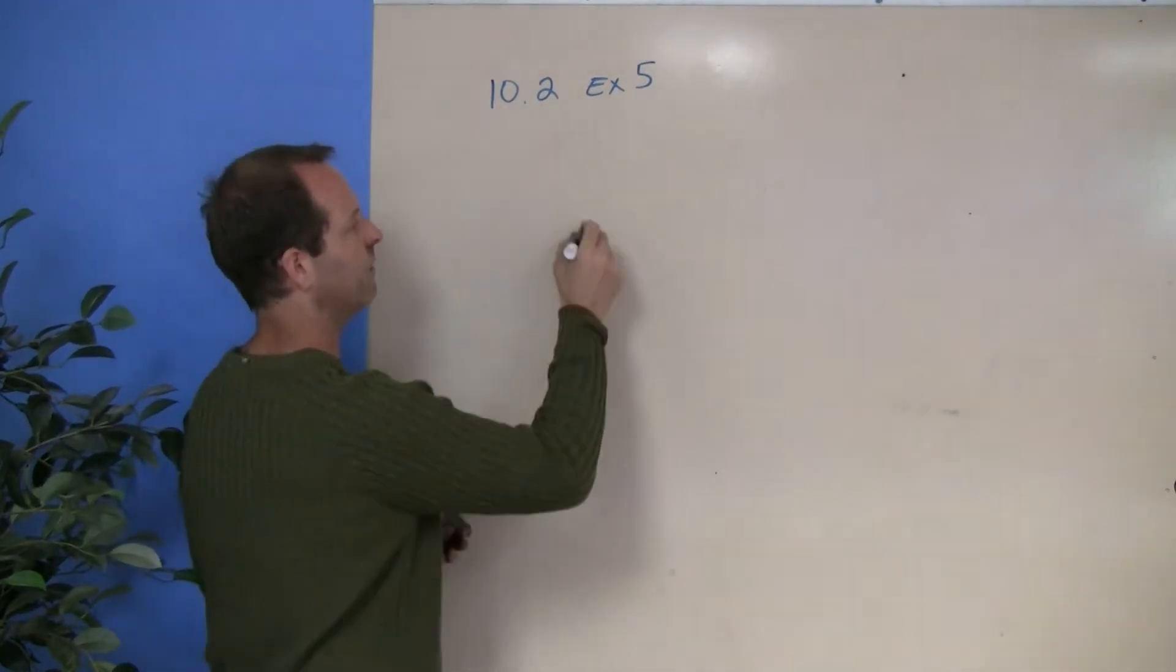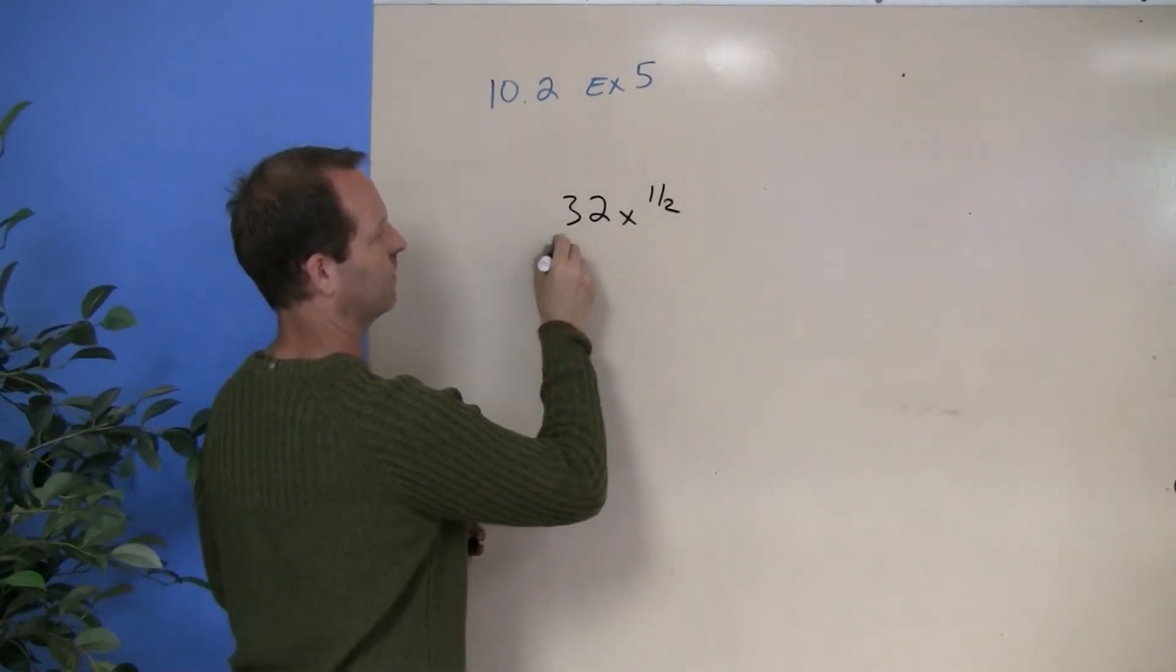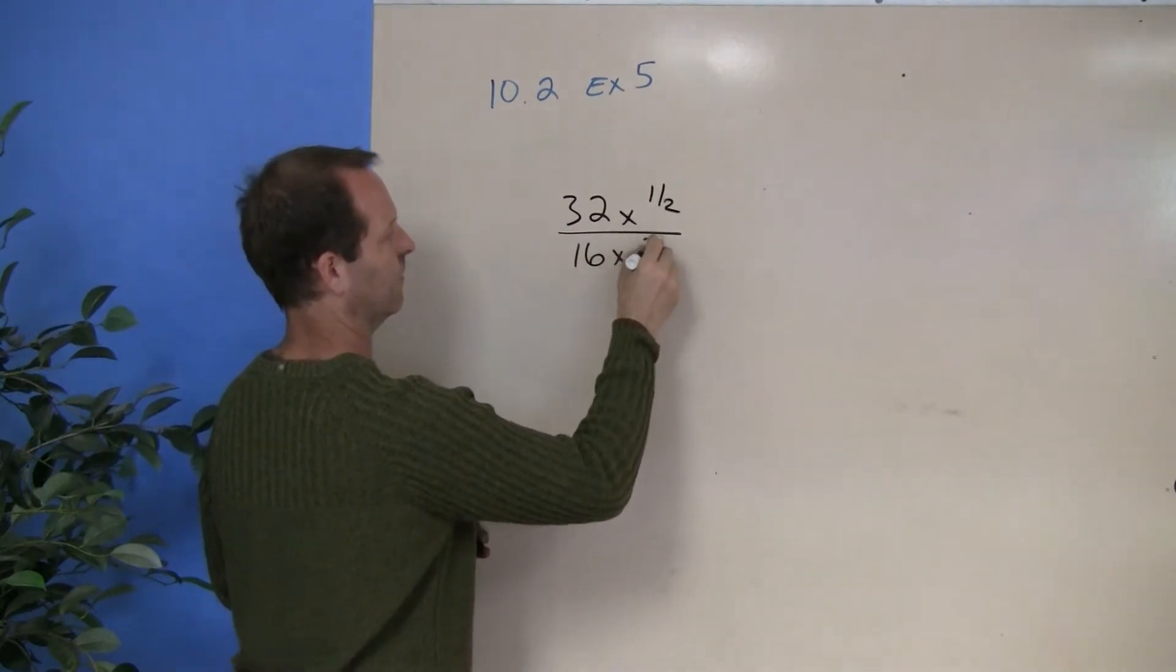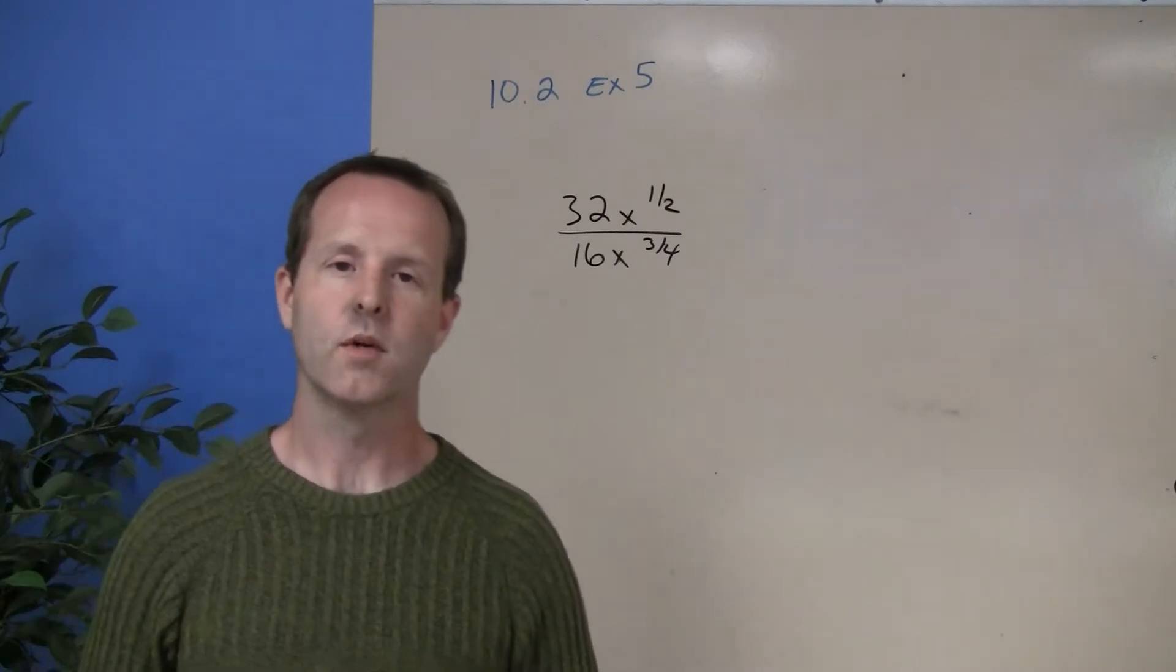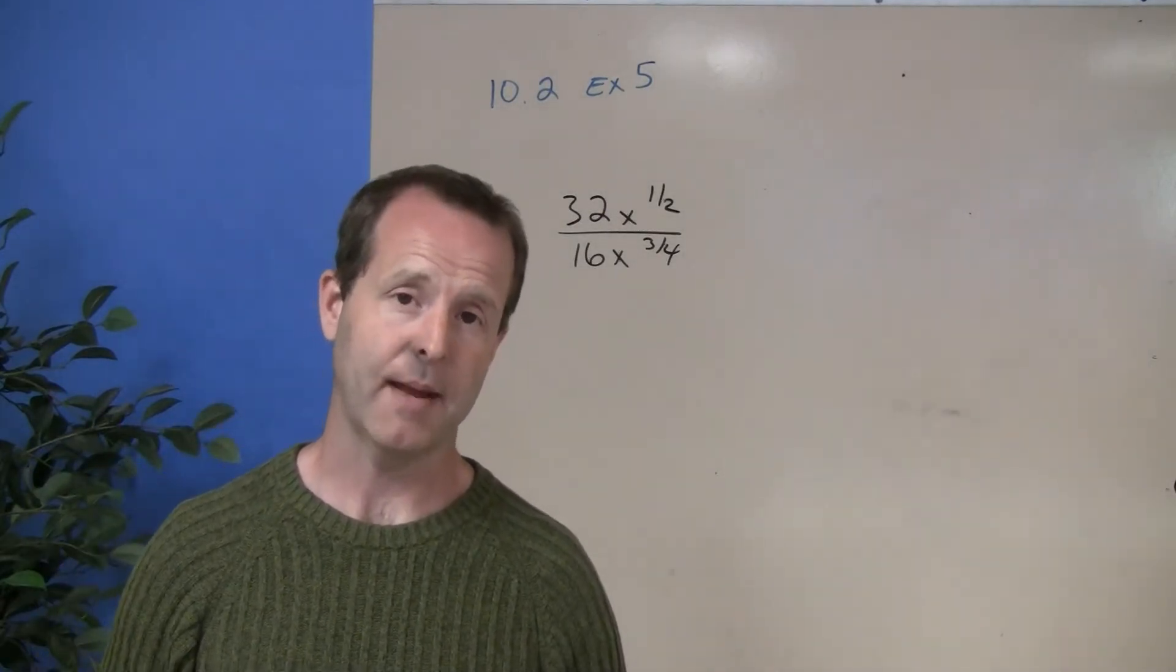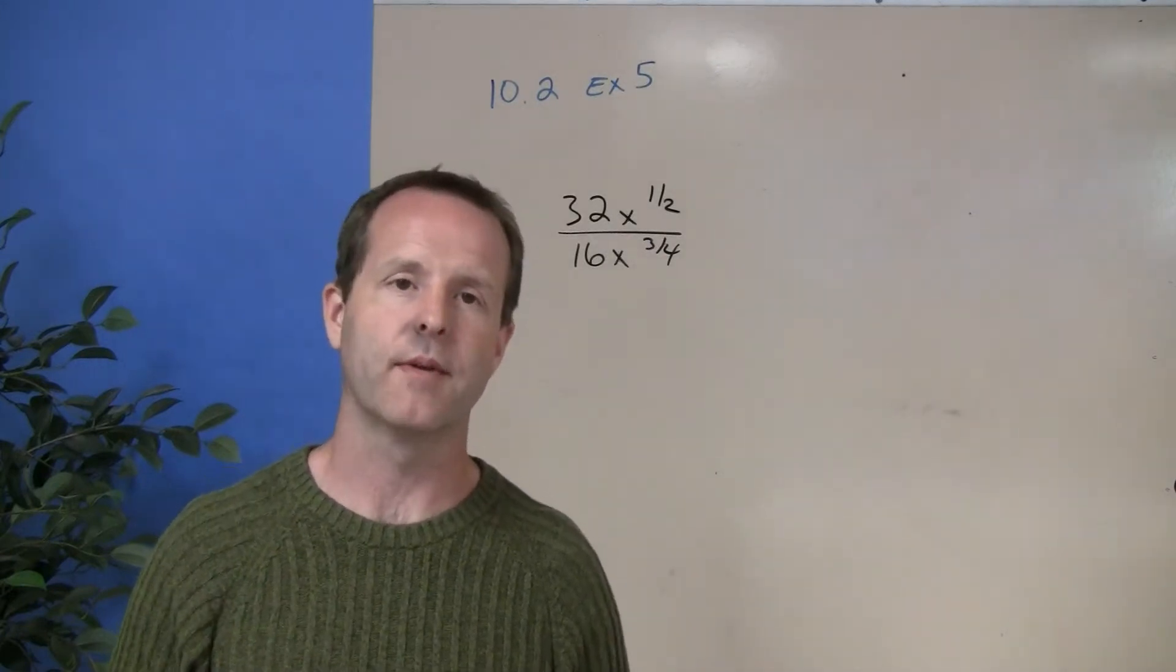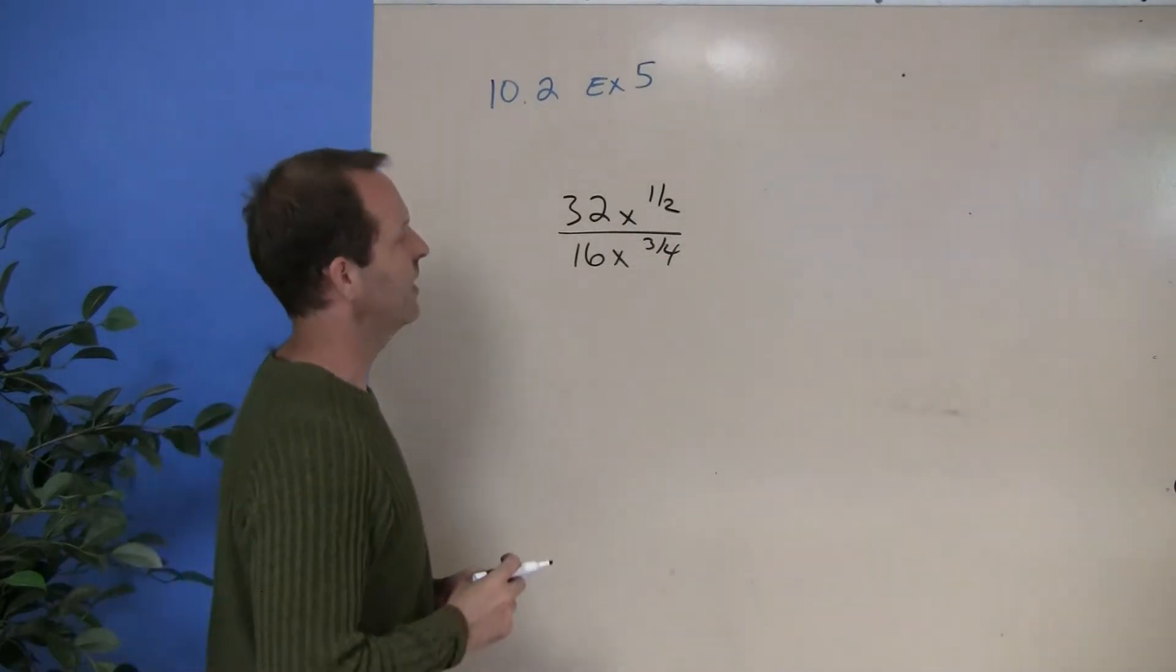All right, what do we do with that one? We're dividing exponents with like bases. And when we divide exponents or numbers with exponents with like bases, we really subtract the exponents.